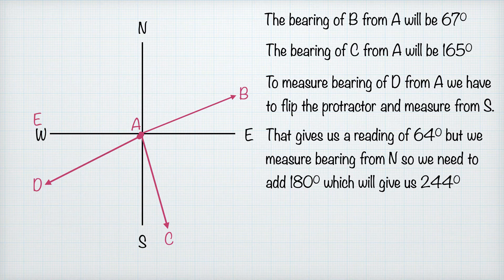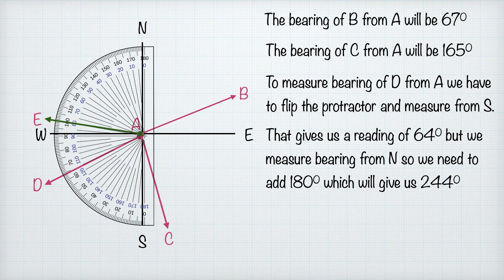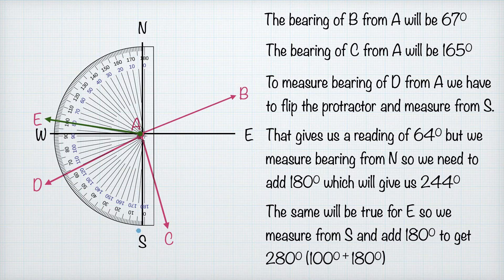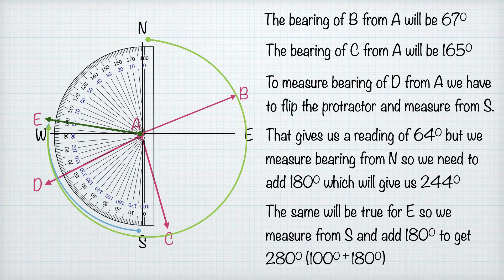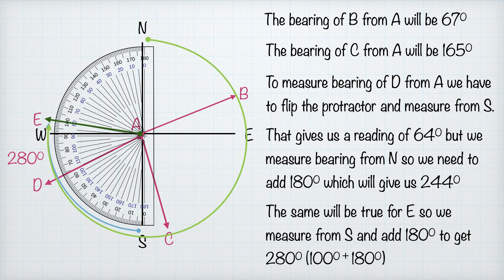Adding 180 to 64 gives a bearing of 244 degrees for point D. For point E, we measure from south and get 100 degrees, then add 180, giving a total of 280 degrees. Bearing is much more accurate — 280 degrees is 280 degrees, and we don't add a compass direction label to it. We measure a total of 360 degrees, giving us an accurate and absolute bearing rather than a relative direction from the 16 cardinal points.